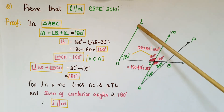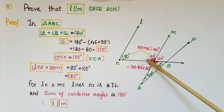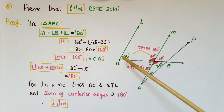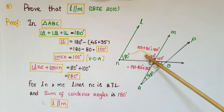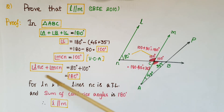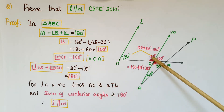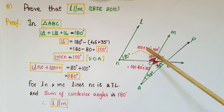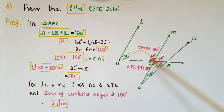Now, with lines l and m and transversal NC, these two angles are co-interior angles. Adding them: angle LC + angle MCN = 80 + 100 = 180 degrees. Since the co-interior angle sum is 180 degrees, the two lines are parallel. Therefore, l is parallel to m.